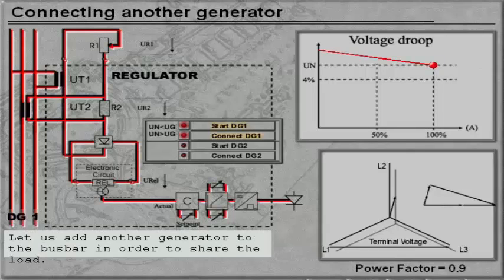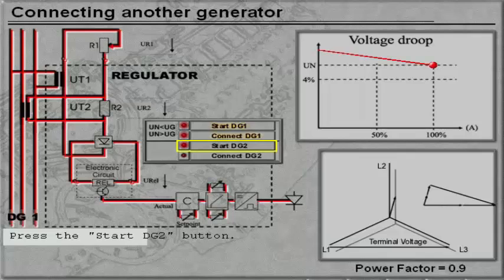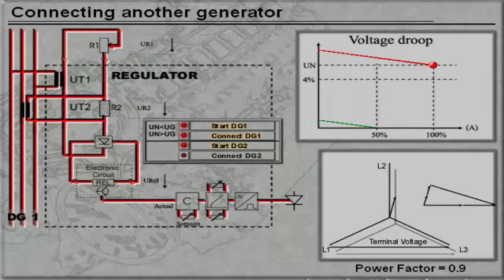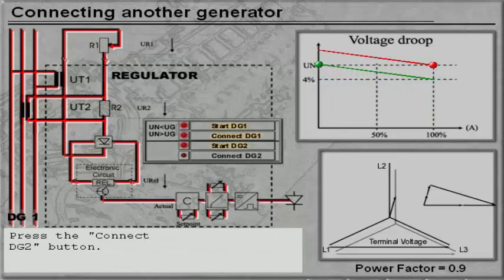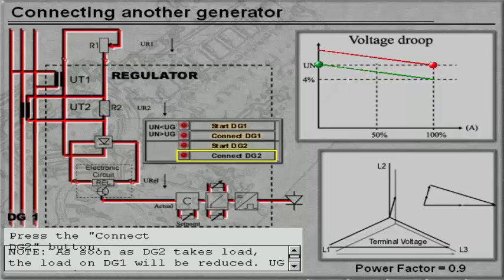Let us add another generator to the bus bar in order to share the load. Press the Start DG2 button. Press the Connect DG2 button. Note, as soon as DG2 takes load, the load on DG1 will be reduced. UG will therefore be greater than UN, and the thyristor will open. The regulators on DG1 and DG2 will then decrease and increase the load on their generators until they are balanced.